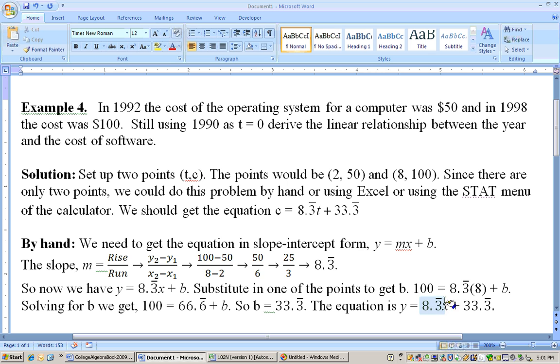Now what does the slope mean? Well, the slope is 8.3 repeating. So what was this about? It was about time and cost. So we can think of this 8.3 repeating as 8.3 over 1, because any number can be written as that number over 1. We're rising this much. This is my rise, and my run is the denominator, which is just 1. So that means for every year, because the run is in the bottom, the x is in the bottom, and that's the 1. So for every year, the cost is going up, because this is a positive, going up by $8.33. So every year, the cost of the operating system is going up by $8.33.